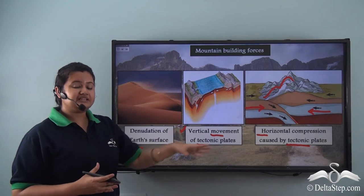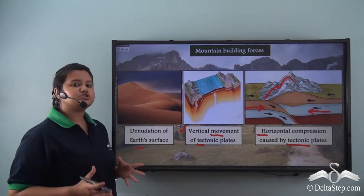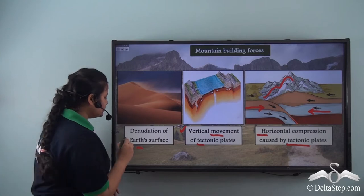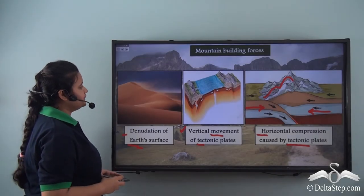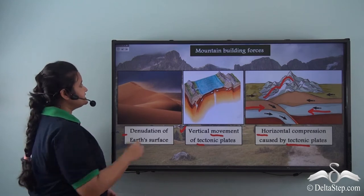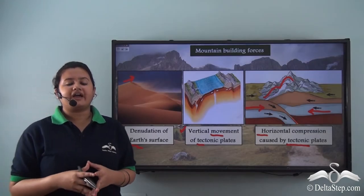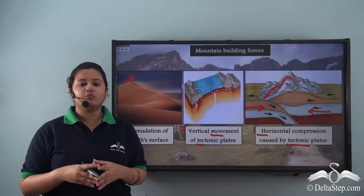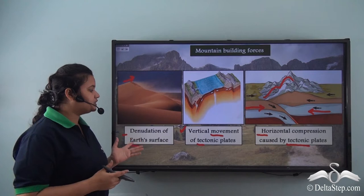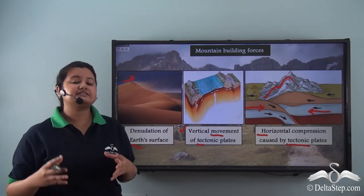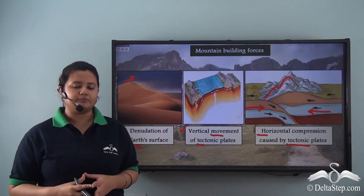Apart from these, mountains are also formed by exogenic forces, that is denudation of the earth's surface. As you can see in this picture, a land surface is being eroded by wind. Natural forces like wind, water, or glaciers erode or denude the earth's surface, and this is another process by which mountains are formed.